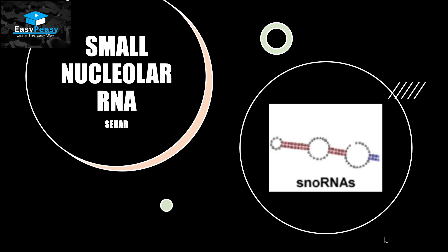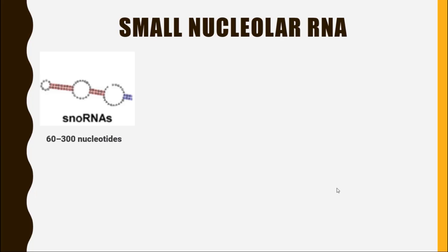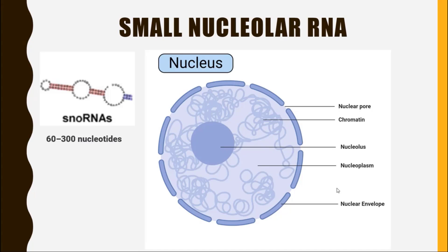Hello, this is Seher from Easy Peasy, and the topic we are going to discuss today is called small nucleolar RNA. Small nucleolar RNA also belongs to the small non-coding RNA category. It has nucleotides from 60 to 300. The location of small nucleolar RNA is the nucleolus of the cell.